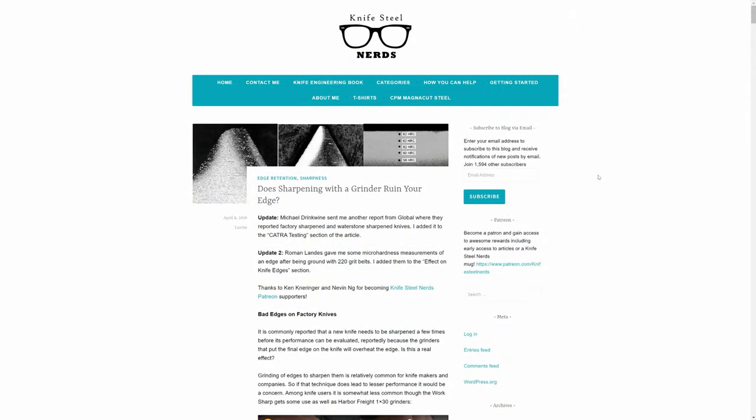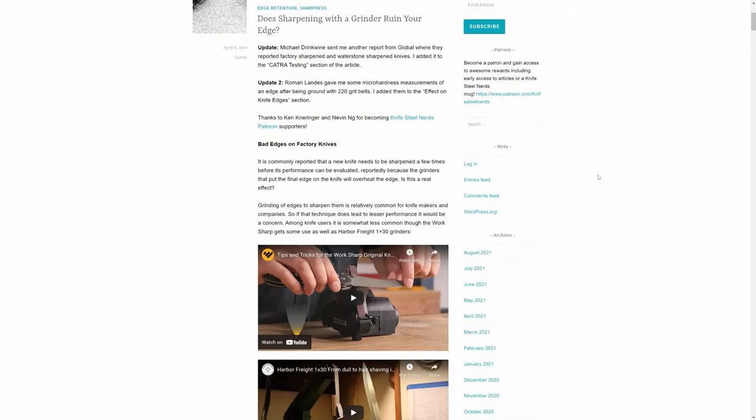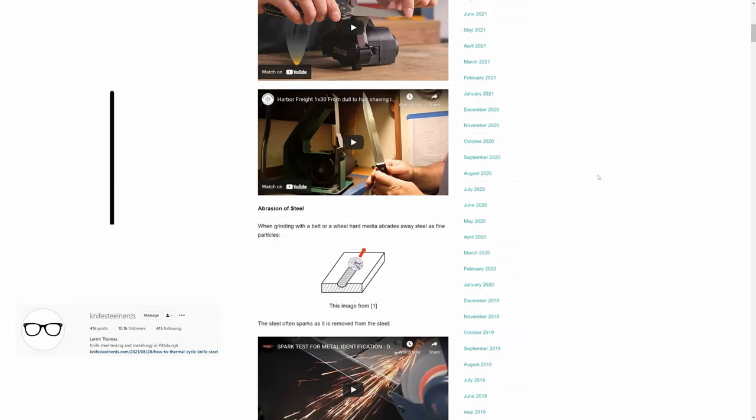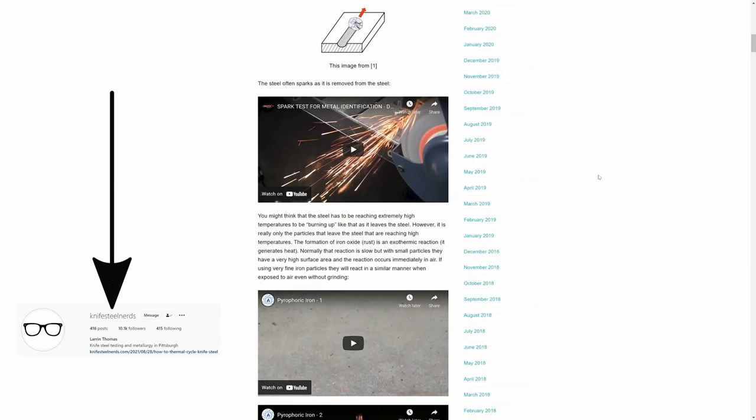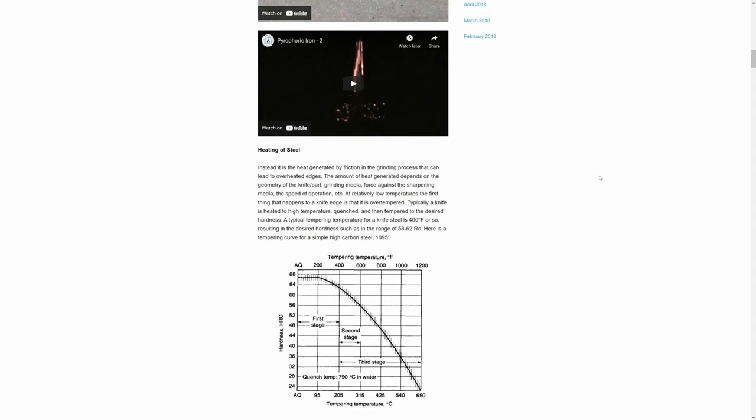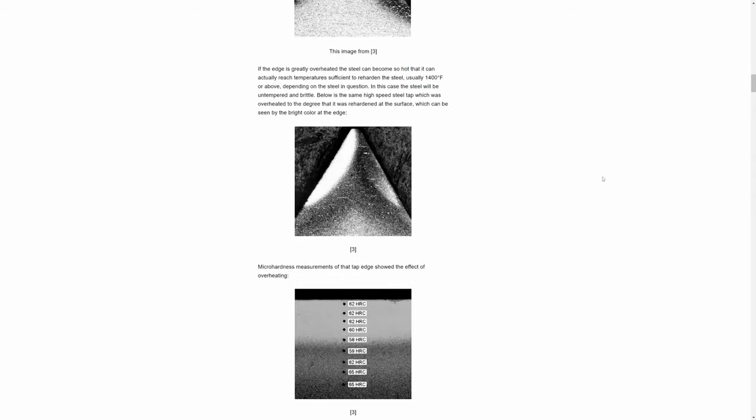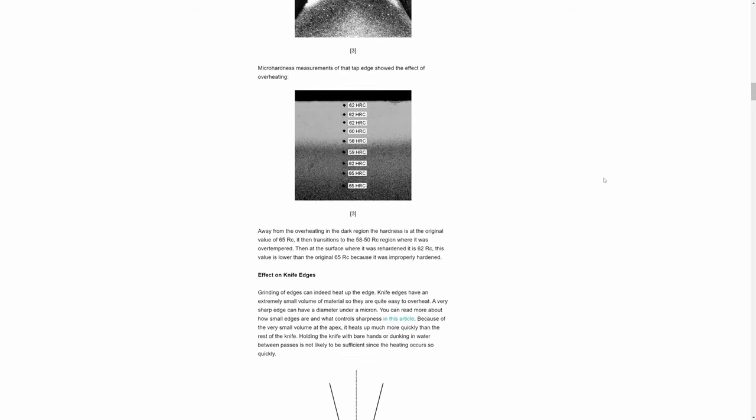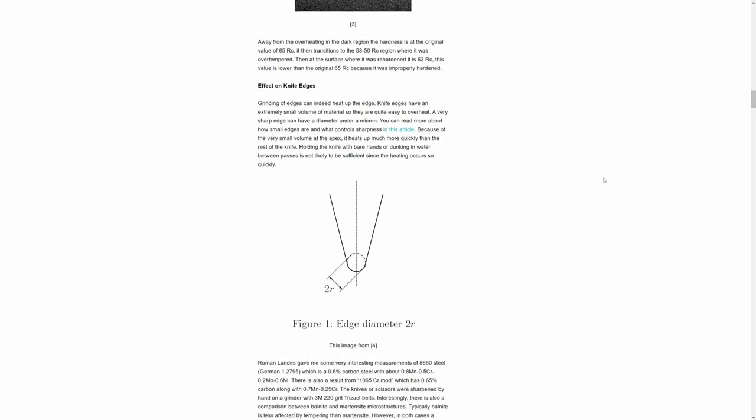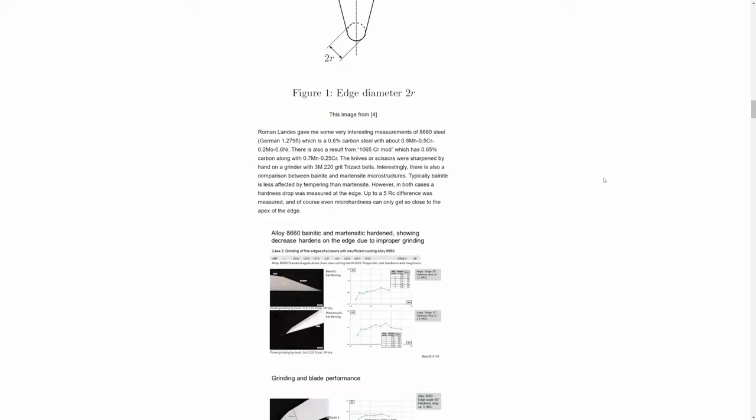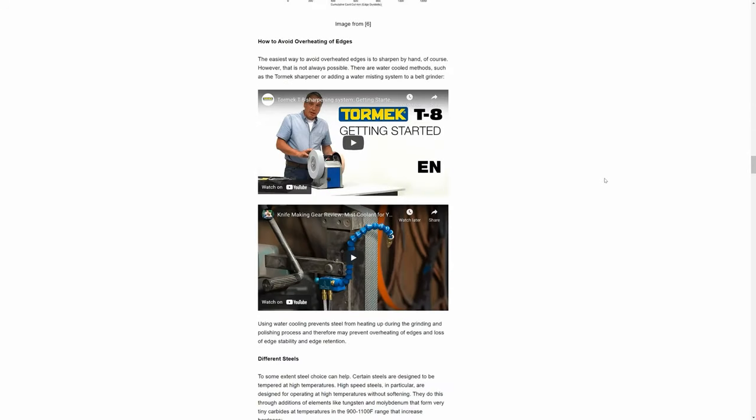Larrin Thomas, aka the Knife Steel Nerd, wrote an article in 2019 on how using your belt grinder for sharpening could lower the hardness of your edge at the apex. Like all of Larrin's work, the article is very detailed so I'll put the link in the description below if you would like to read the entire thing.